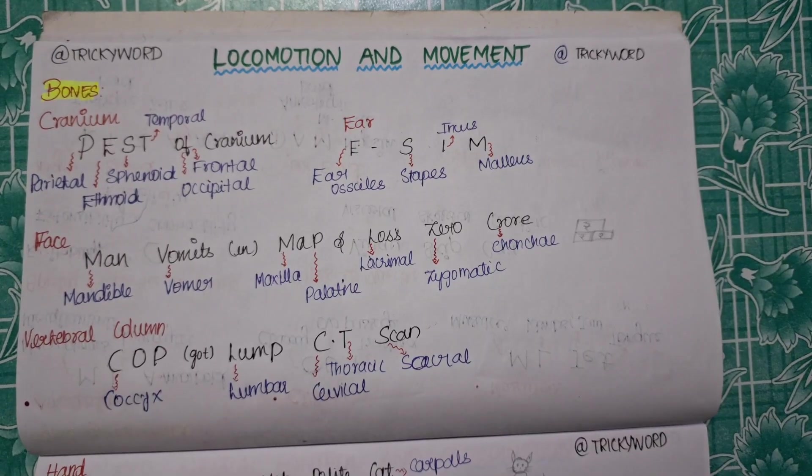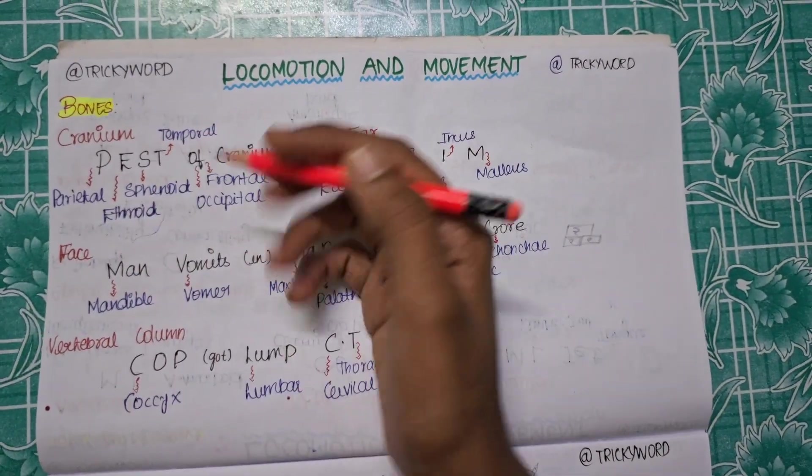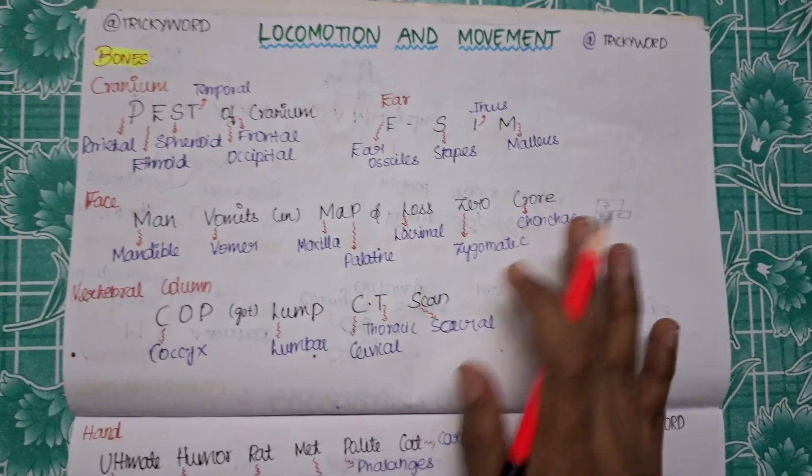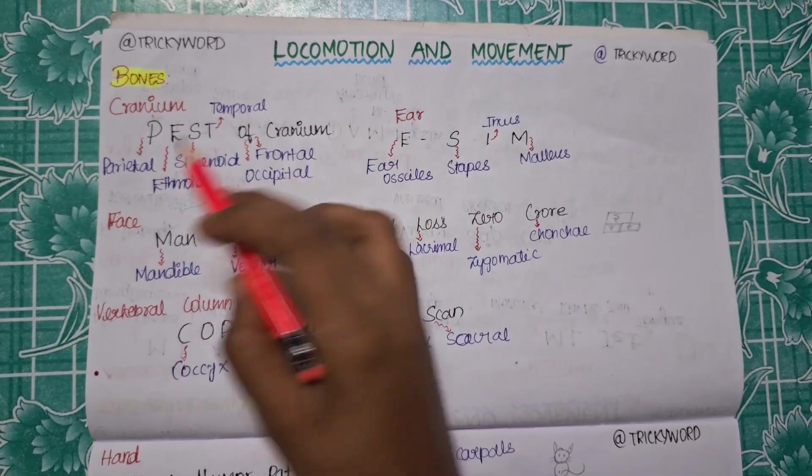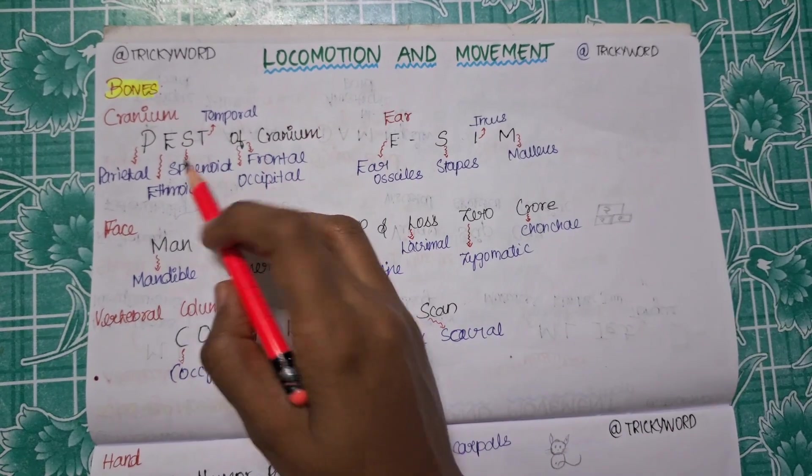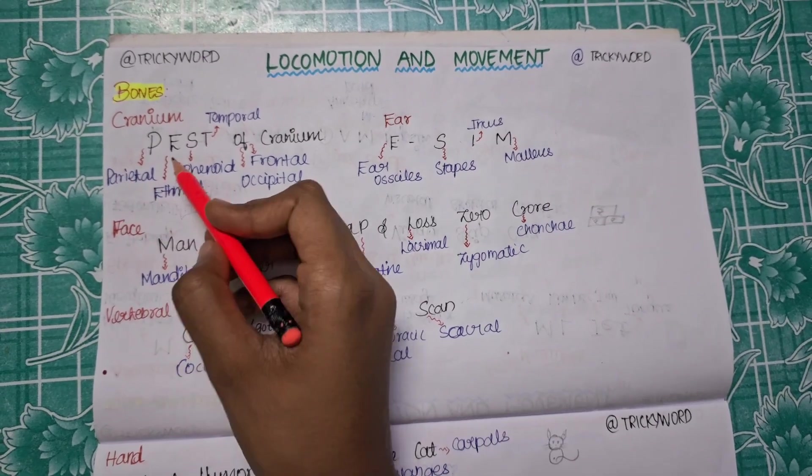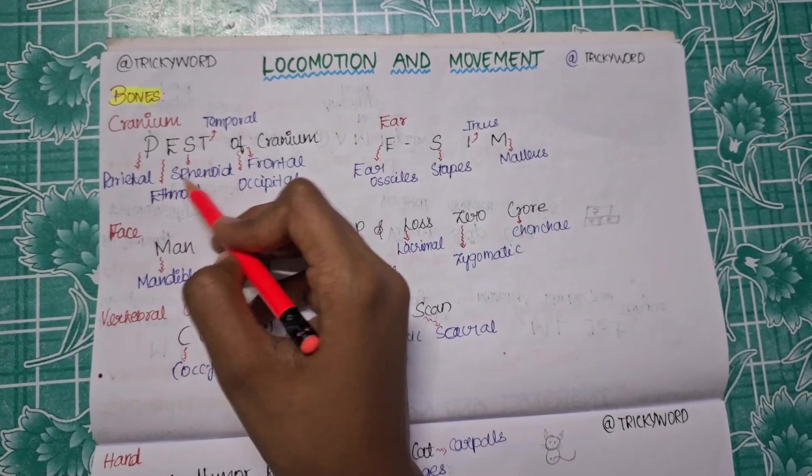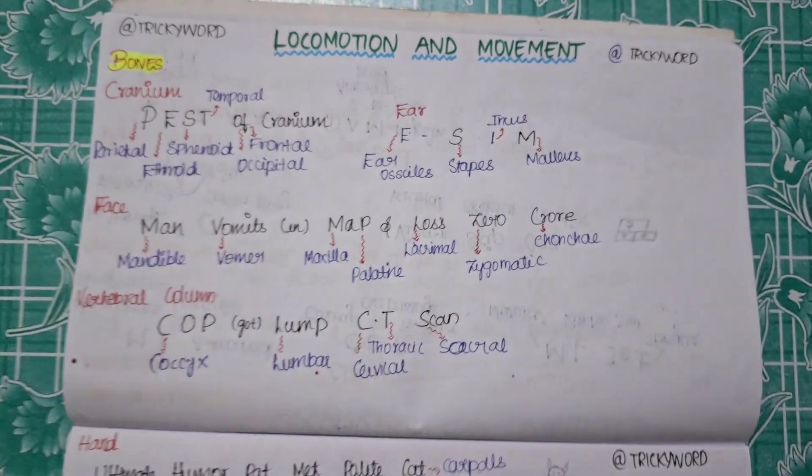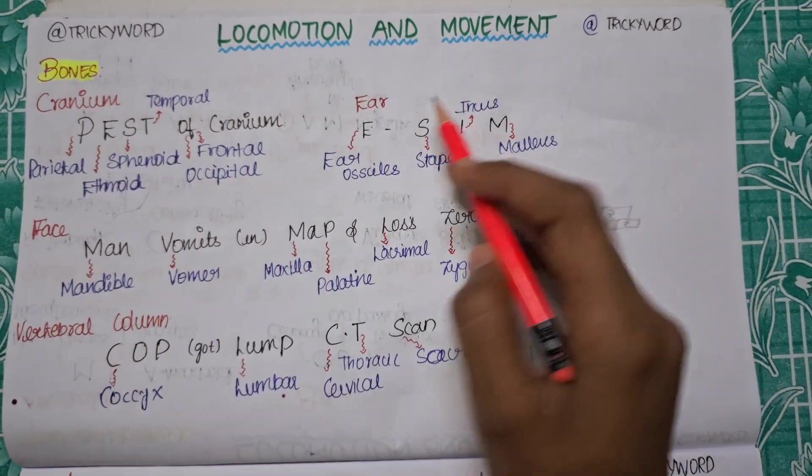These are the most important part of this video. This deals with the bones you need to memorize. What are the bones present in your ear, cranium, or vertebral column? It will make it really easy. We will start with the cranium. Cranium is nothing but your skull. The first trick for cranium bones will be PEST of cranium. P stands for parietal bone, E for ethmoid bone, S for sphenoid bone, T for temporal, O for occipital, F for frontal, and cranium is for cranium.